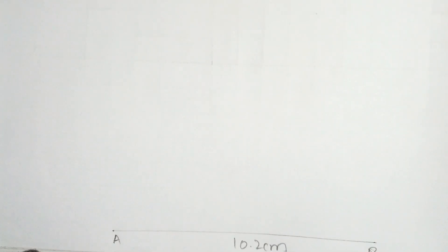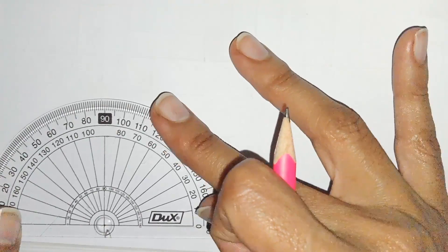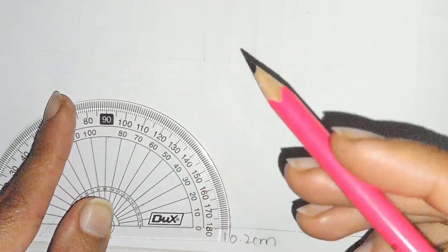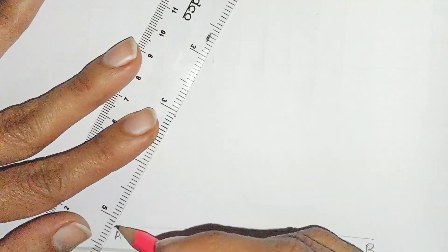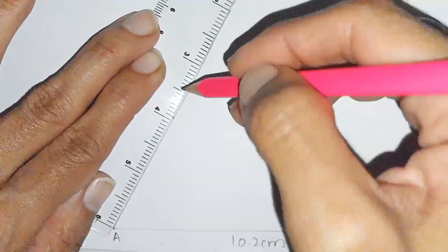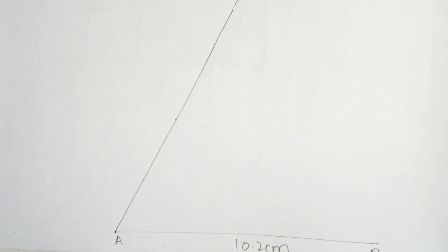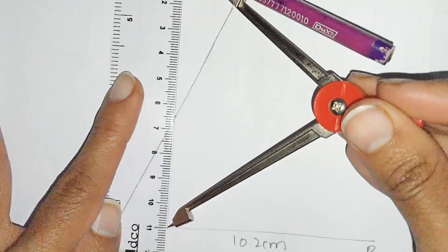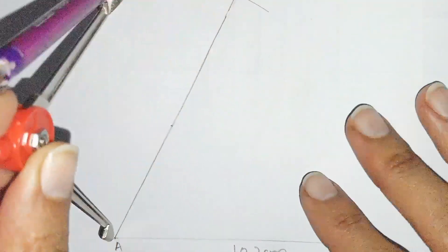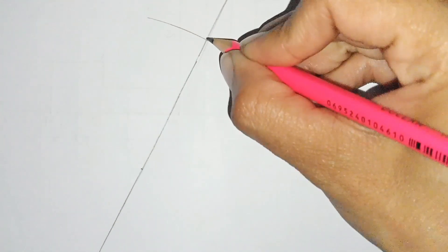Now at point A, draw an angle of 62 degrees using the protractor. I am making an angle of 62. We place the 0 of the protractor on that line and mark 62 degrees. Now for line AC of 11 cm, we open the compass to 11 cm. Place this compass at point A and mark the point on the line. This is the point C where it cuts.